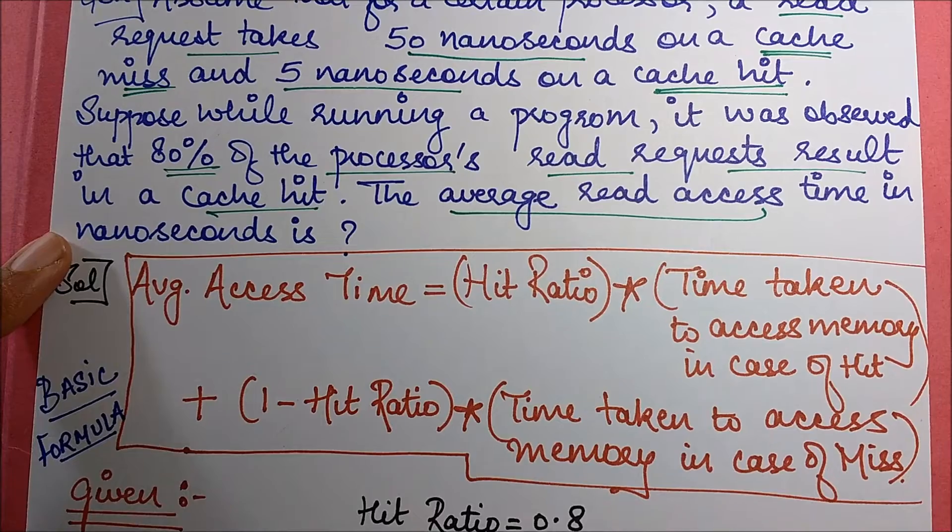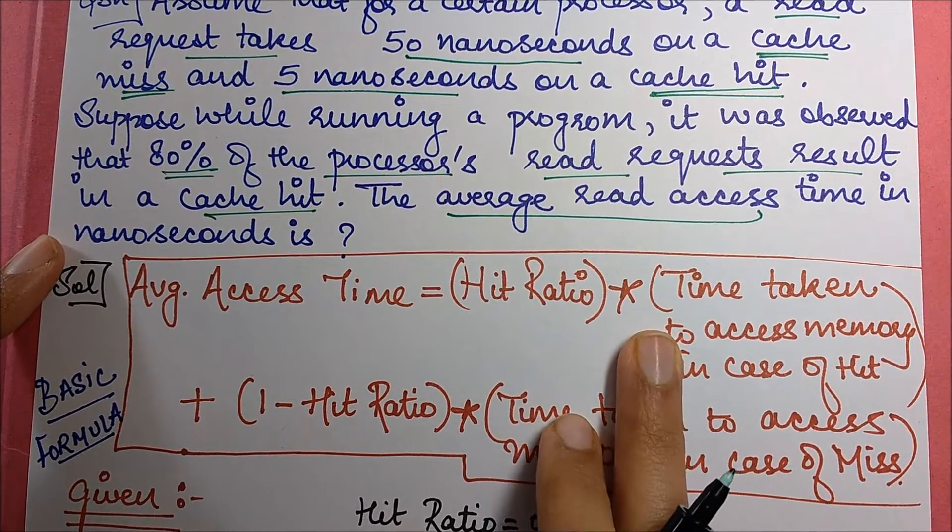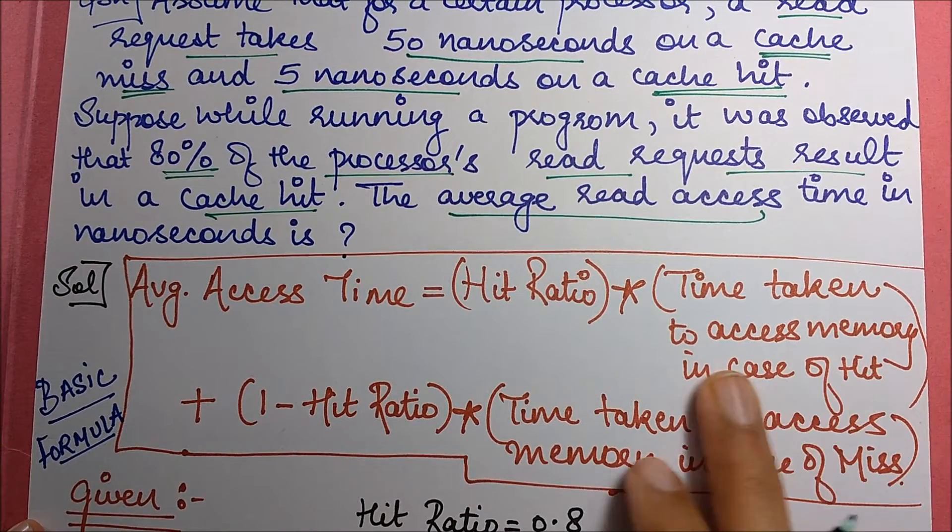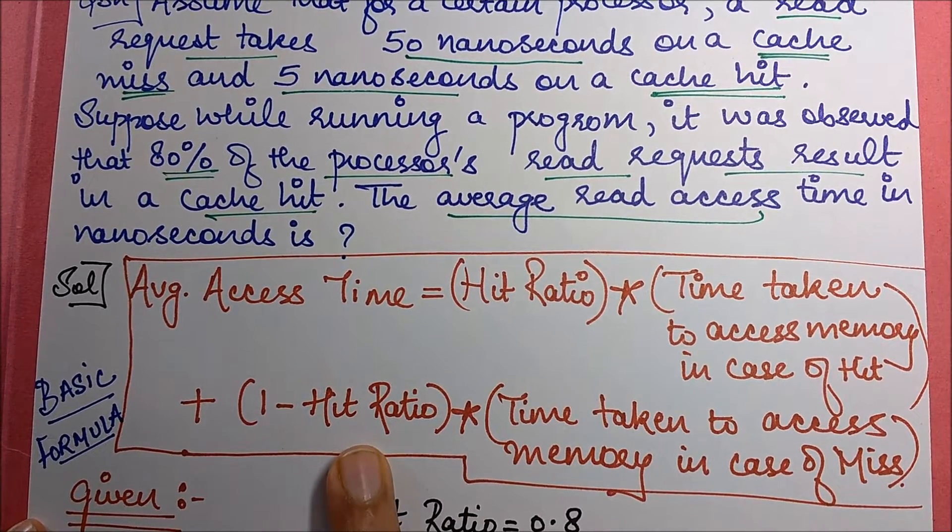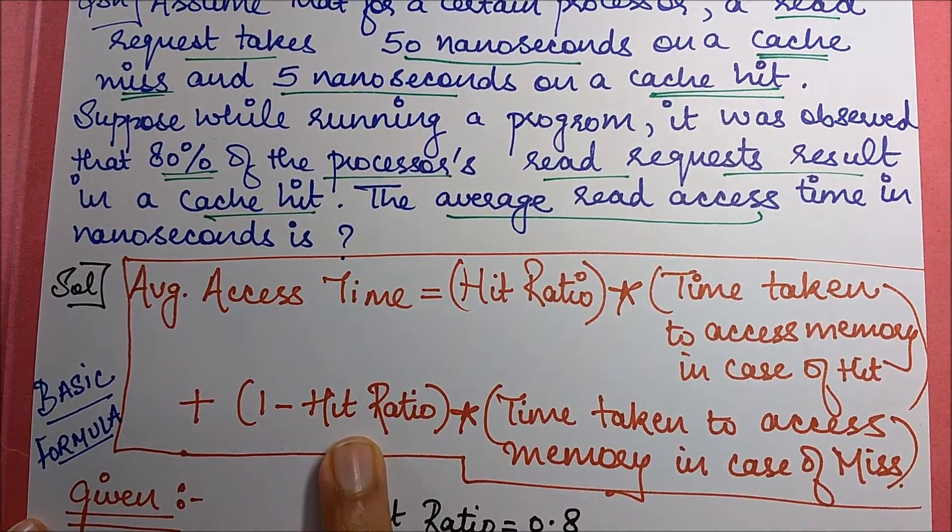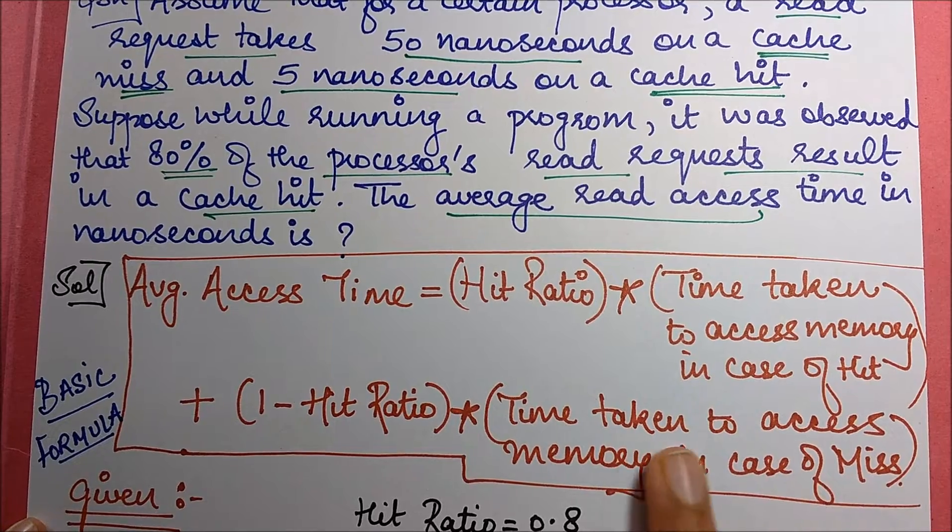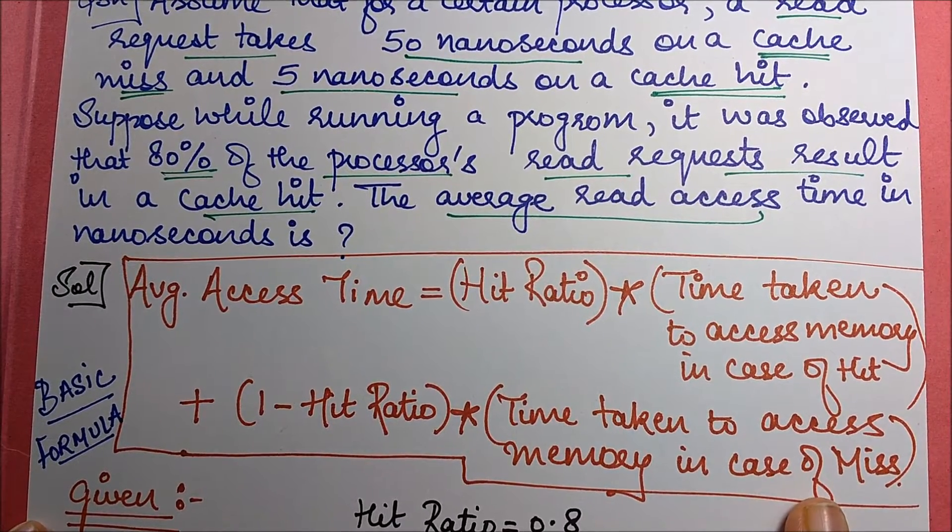The formula is: average read access time equals hit ratio multiplied by time taken to access in case of hit, plus 1 minus hit ratio, which gives you the miss ratio, multiplied by time taken to access memory in case of miss.